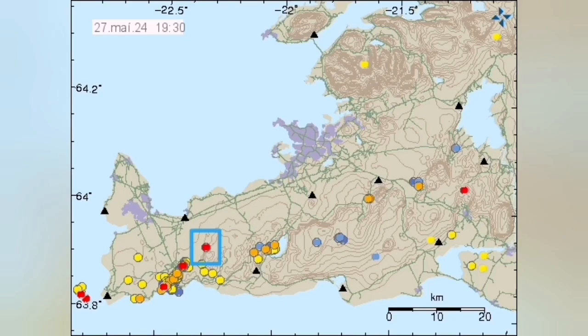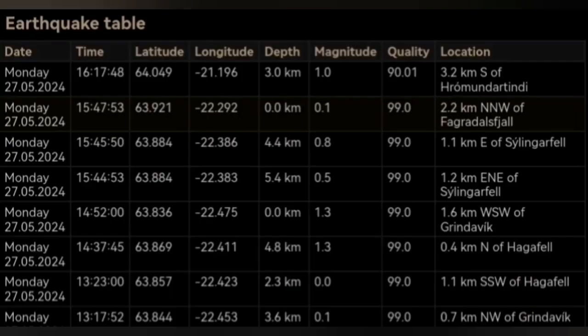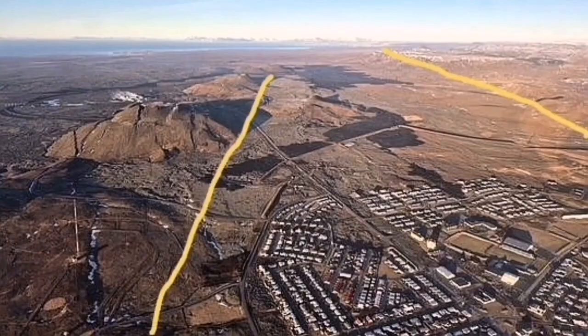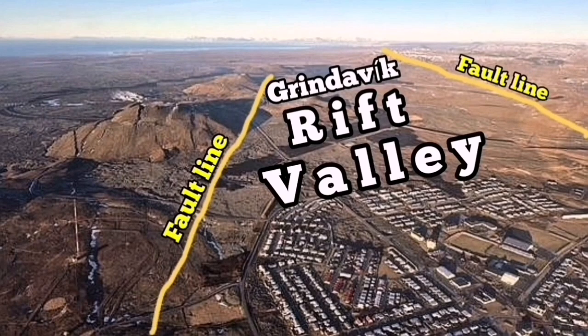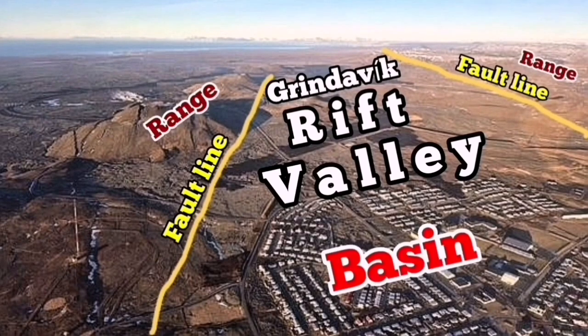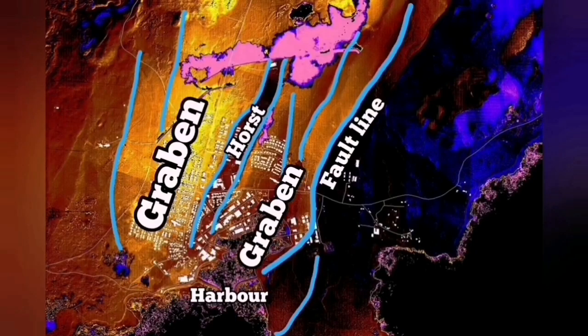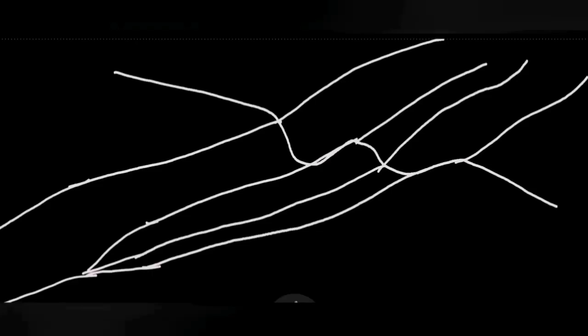And when we look at the depth of it, this is at zero depth, 2.2 kilometers north of Fegerdalsfjall. That's practically exactly on the plate boundary we see it. It was a small one. This is the Grindavik Rift Valley. Usually, the stretching of the ground causes fall down of the fault lines and the middle part, which is the Grindavik Rift Valley.